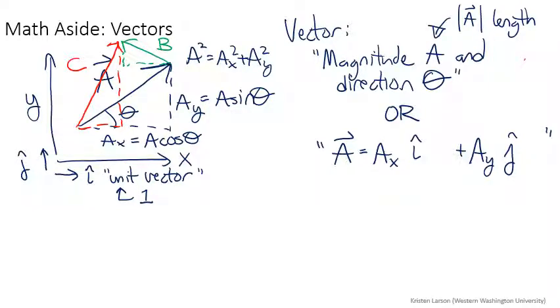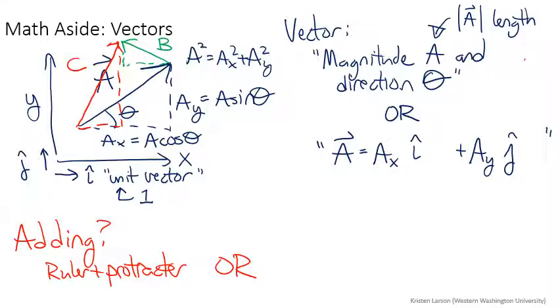No rulers required. So if I'm adding vectors, I can either use a ruler and a protractor, or I can use that the vector C is the x component of C, i hat, plus the y component of C, j hat. And because the x components are all in the same line, I can just add them in the usual way. So I get Ax and Bx together. And in the y components, I get Ay and By.